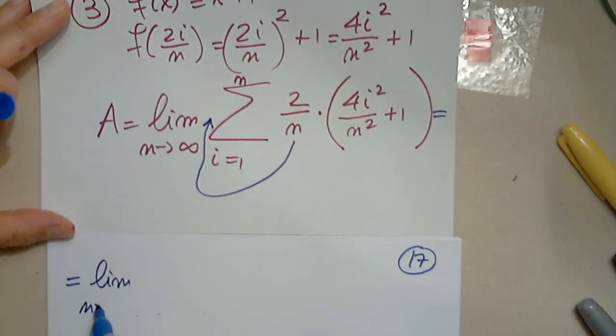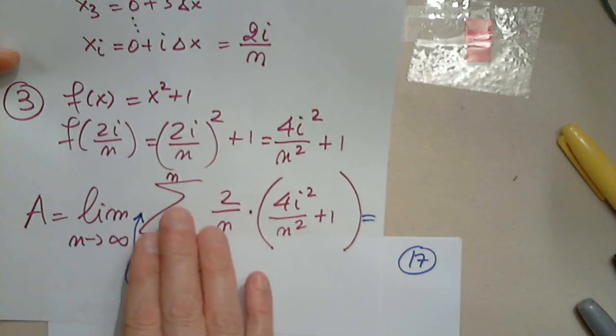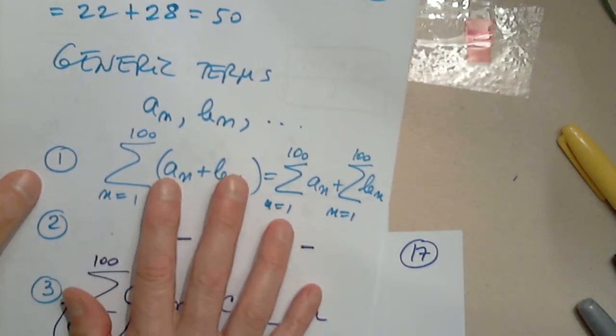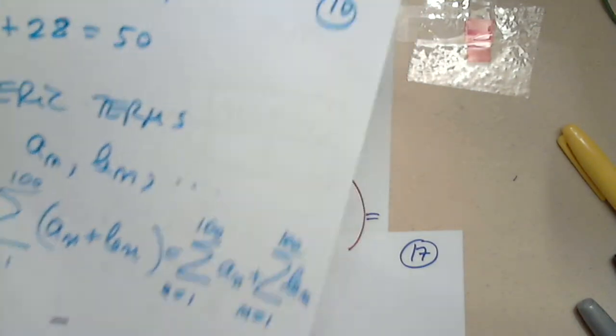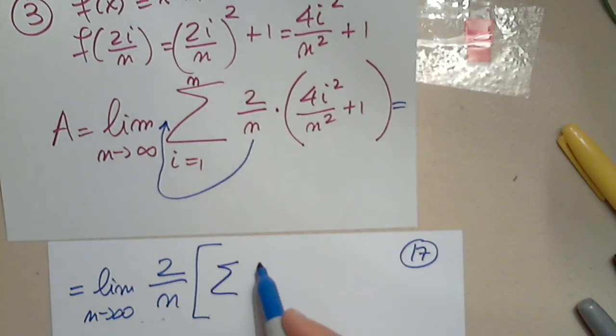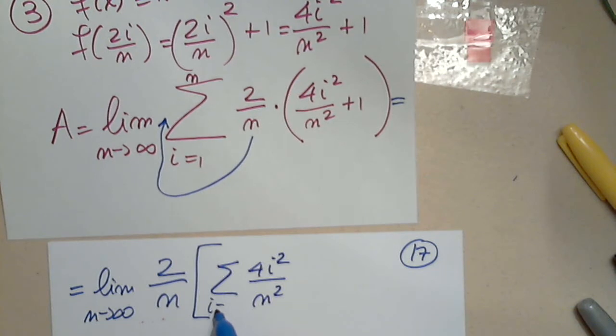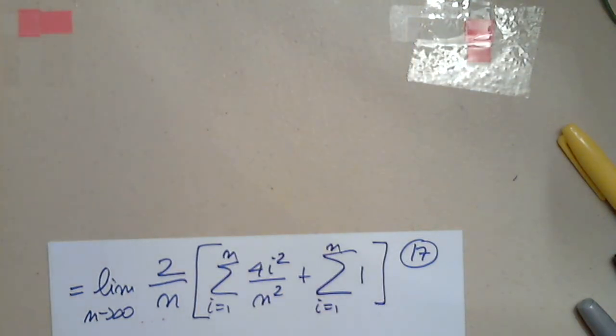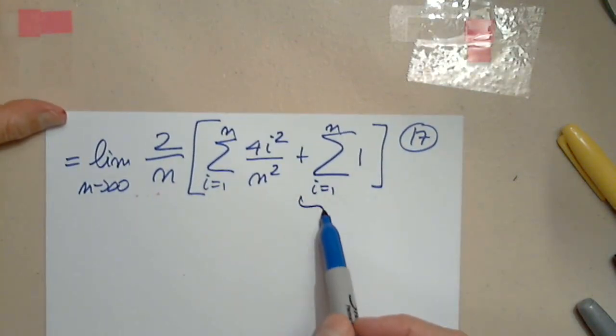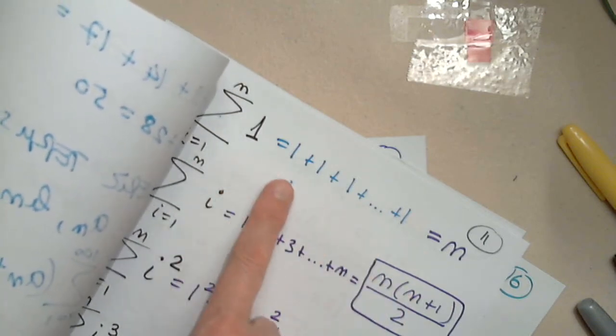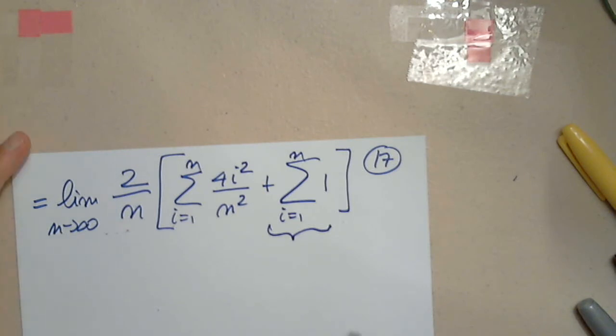So this is limit as n approaches infinity of 2 over n. Then what is left is the summation of two terms added together, and that's another property. The sum of two terms is the sum of the first term plus the sum of the second term. I'm going to immediately write that. Then I have the sum of 4i squared over n squared from i equals 1 through n, plus the sum of 1. This I know, it's n. So this piece is already known.